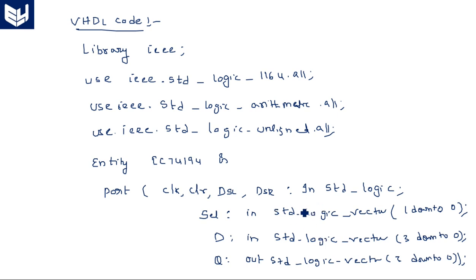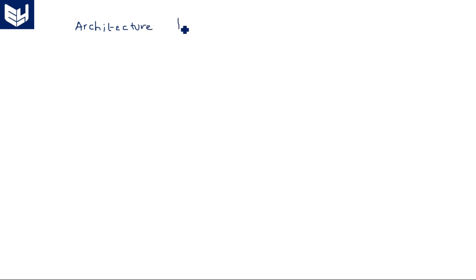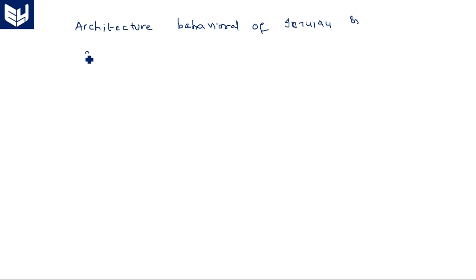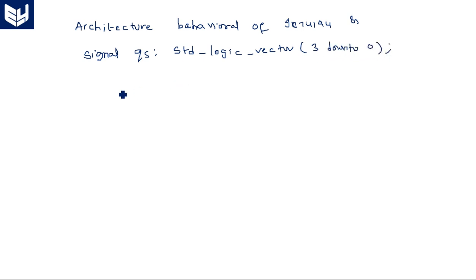The data input D for parallel load operation is of type std_logic_vector, three down to zero. Output Q is also a four-bit std_logic_vector, three down to zero. These are the input and output ports for IC 74LS194. Now architecture specifies the complete behavior of the hardware. Inside architecture we take an internal signal QS of type std_logic_vector, three down to zero.